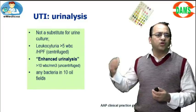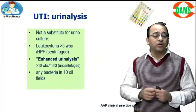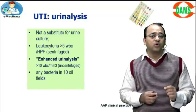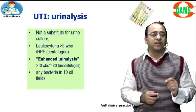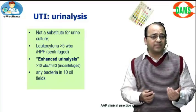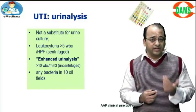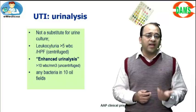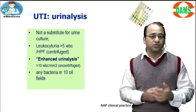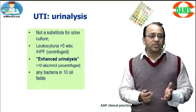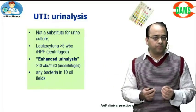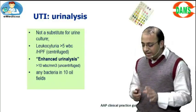First we look for urine analysis, but remember urine analysis is not a substitute for urine culture — you have to do a urine culture to prove UTI. On centrifuged urine, more than 5 WBCs per high power field is significant leukocyturia. On non-centrifuged urine, more than 10 WBCs per millimeter cube. Any bacteriuria in 10 oil fields is always significant.